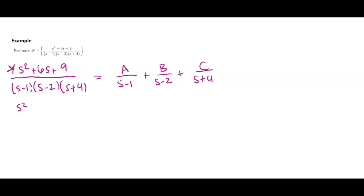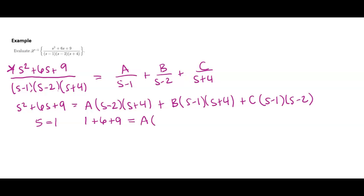That tells me that S squared plus 6S plus 9 must be equal to a times S minus 2 times S plus 4, b times S minus 1 times S plus 4, and c times S minus 1 times S minus 2. If I end up letting S be equal to 1, then I get 1 plus 6 plus 9 equals a times negative 1 times 5, and then these all zero out. That then tells me that a is going to be equal to negative 16 over 5.